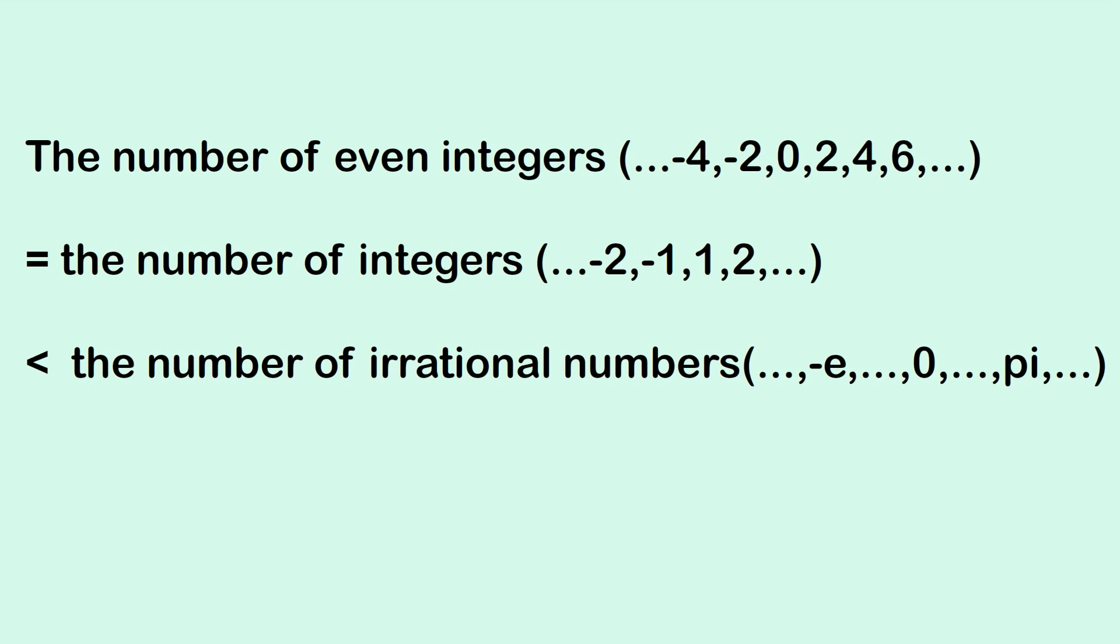Number 6. The number of even integers is equal to the number of integers, which is less than the number of irrational numbers.